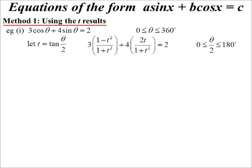Basically we've turned our trig equation into a quadratic equation. But we've got to be careful because now t represents tan theta over 2, so I'm only looking for answers between 0 and 180, because it's theta over 2. Multiply everything by 1 plus t squared - it's convenient because the denominator is the same in both t results.